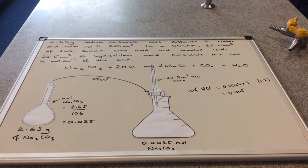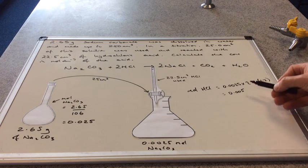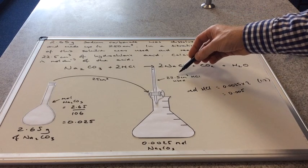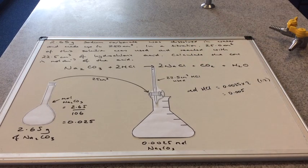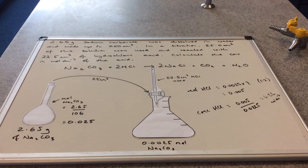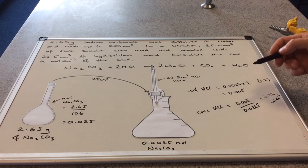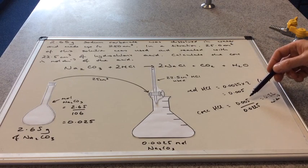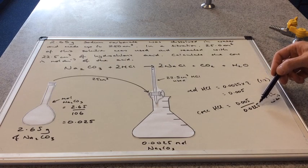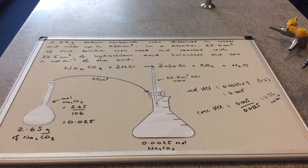We now know the moles of hydrochloric acid and the volume used, so we can calculate its concentration. We take the moles of acid and divide by the volume in dm³, and that comes out as 0.22 moles per decimetre cubed.